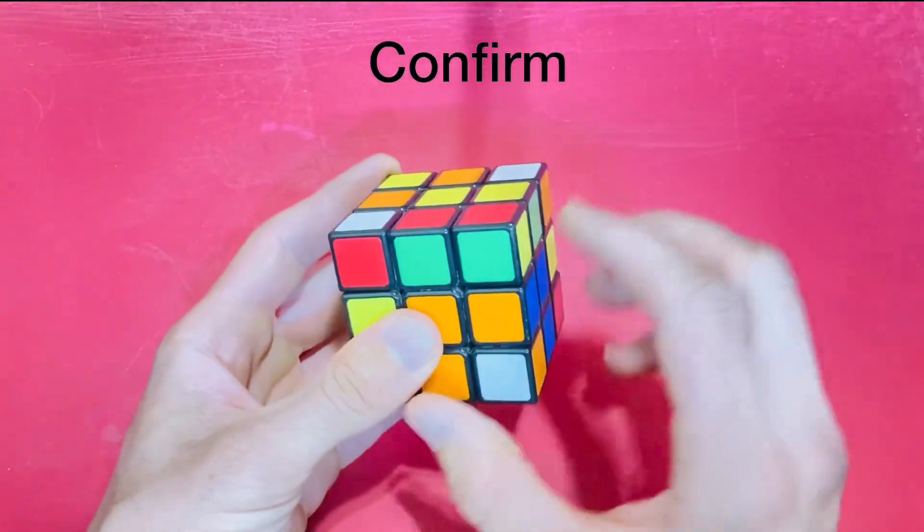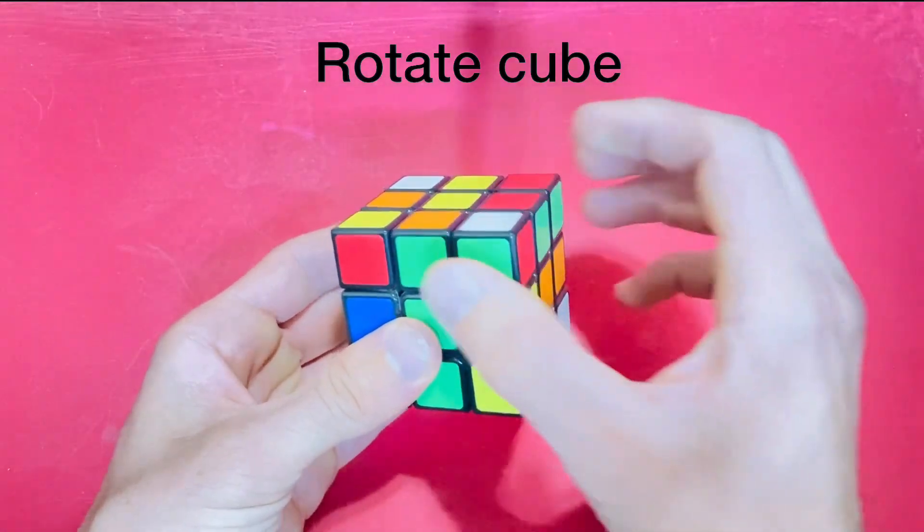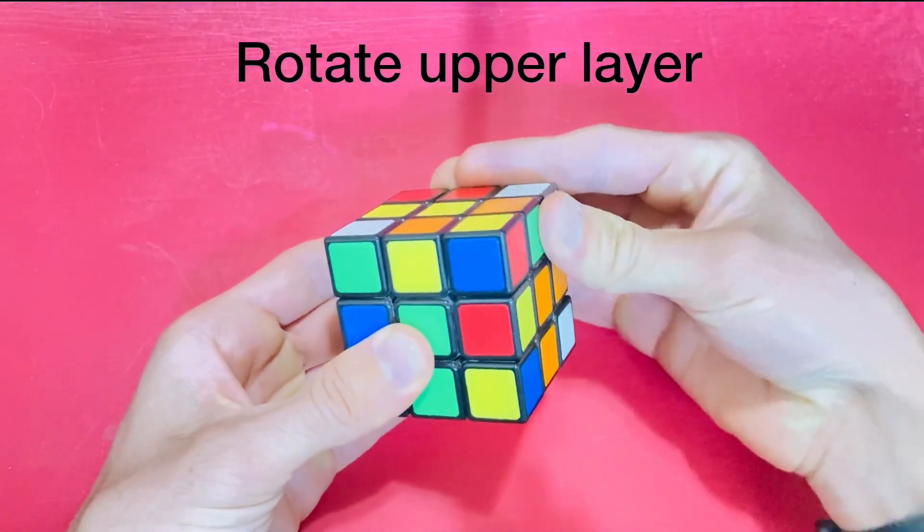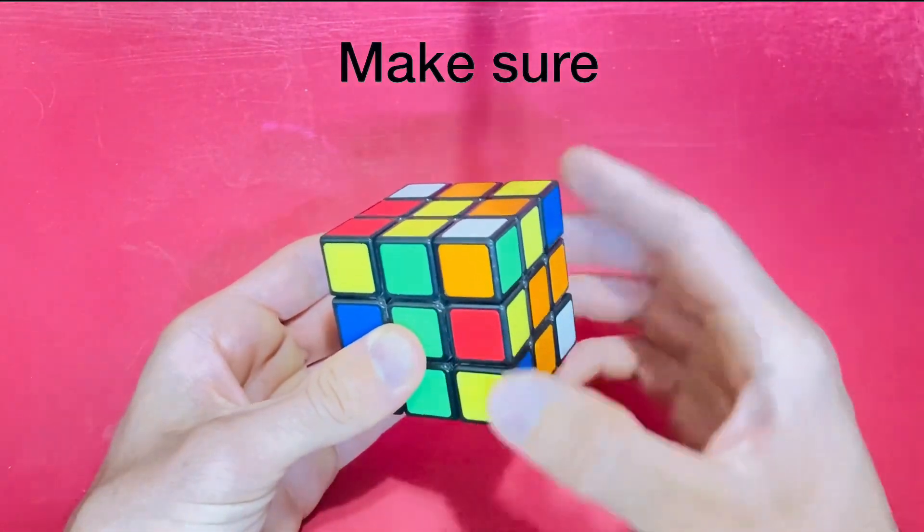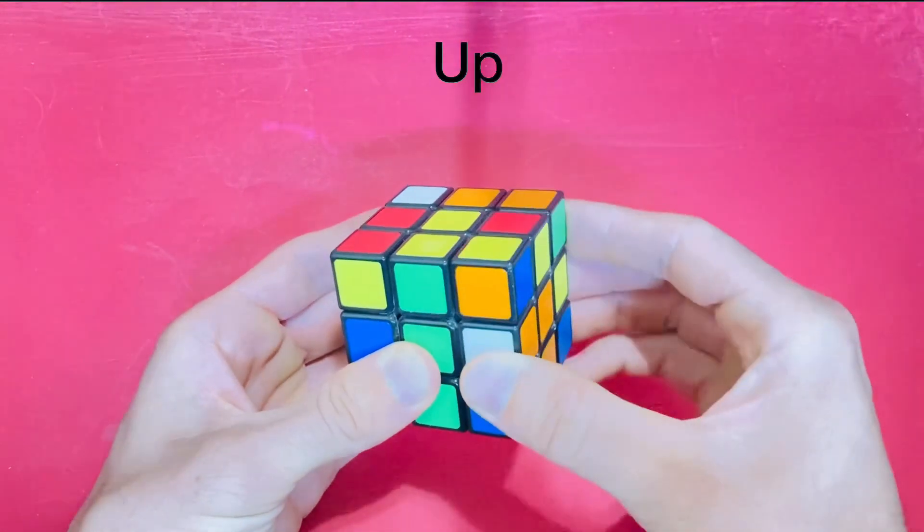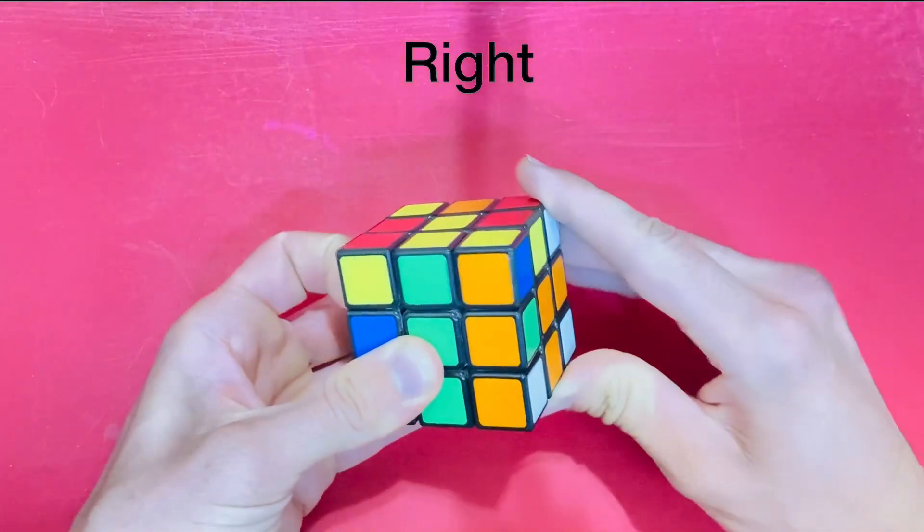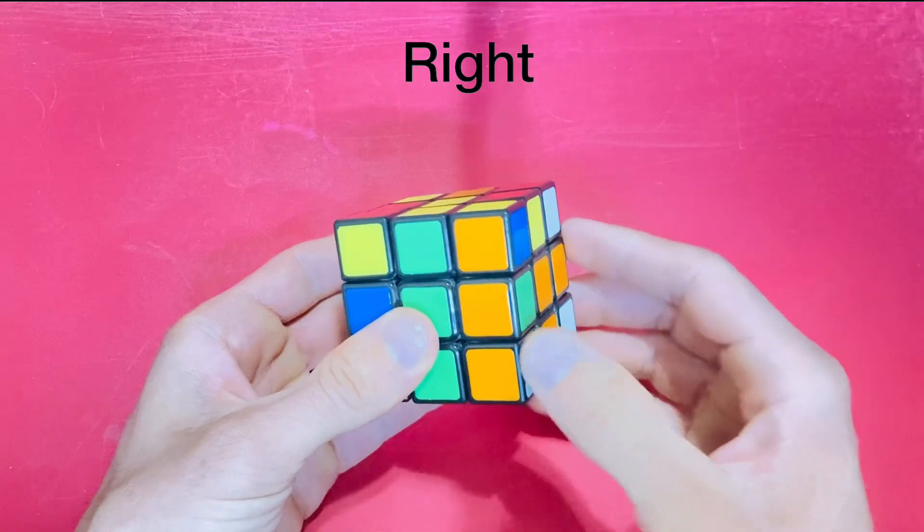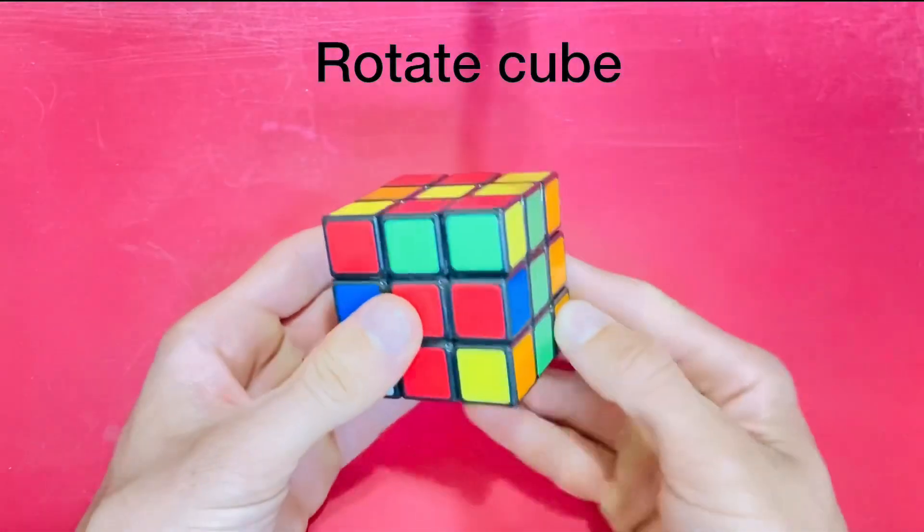Make sure it is in the correct location and you can move on to the next corner. Rotate the upper layer until you find the right corner. Up, left, down, right. Make sure it is in the correct location now. Move on to the next corner.